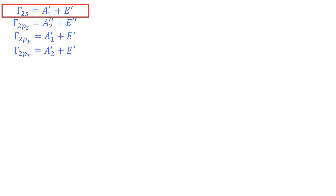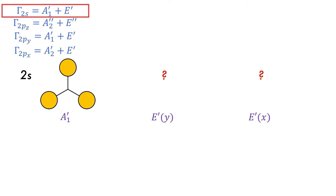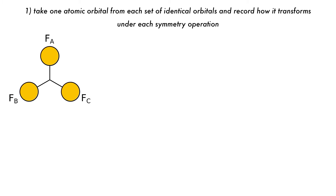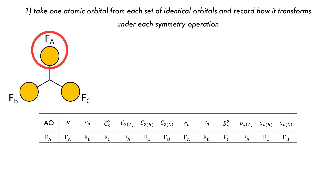Looking at the 2S orbitals, let's try to construct their diagrams. The A1 prime is just the totally symmetric representation and has all the S orbitals in phase. But what do E prime X and E prime Y look like? As we have three orbitals, we need a procedure to make sure we obtain the correct combination for our linear combination of atomic orbitals. This is the projection operator method, which will give us a systematic way to find our symmetry-adapted linear combinations from the atomic orbitals. We label our fluorine 2S orbitals A, B, and C, and then do the symmetry operations on fluorine A.